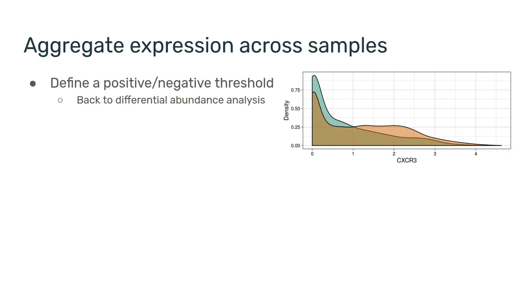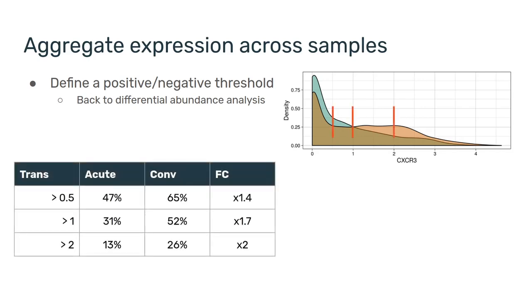One thing to be aware of is that the threshold could really affect the values that we're seeing here. I've picked three different thresholds for CXCR3—0.5, 1, and 2. And based on these, we can see a fold change of times 1.4, times 1.7, or times 2.